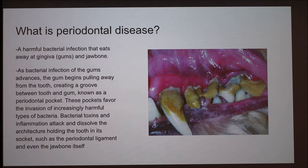These pockets favor the invasion of harmful types of bacteria, and the bacterial toxins and inflammation attack and dissolve the architecture holding the tooth in its socket, such as the periodontal ligament and even the jaw bone itself.